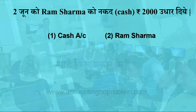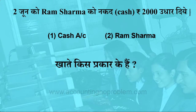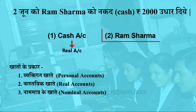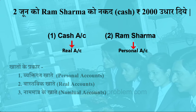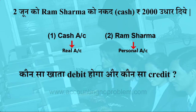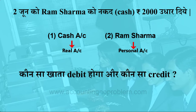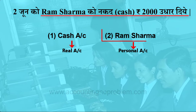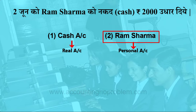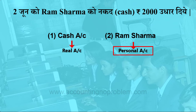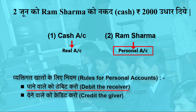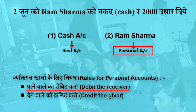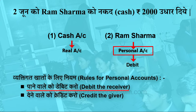दूसरा सवाल ये कि खाते किस प्रकार के हैं — नकदी यानि Cash का खाता Real Account है और रामशर्मा का खाता Personal Account. अब तीसरा सवाल — कौन सा खाता Debit होगा और कौन सा Credit? रामशर्मा को हमने रुपए उधार दिये हैं तो रामशर्मा हुआ पाने वाला. यह Personal Account है और Personal Account के लिए नियम है Debit the Receiver, यानी पाने वाले को Debit करो — मतलब रामशर्मा का खाता Debit होगा.